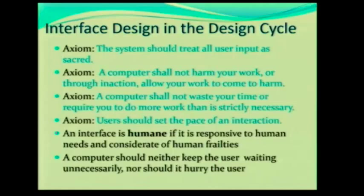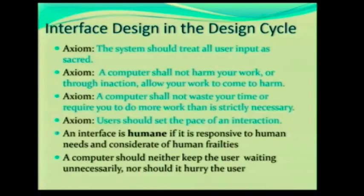Raskin claims that an interface is humane if it is responsive to human needs and considerate of human frailties. A computer should neither keep the user waiting unnecessarily, nor should it hurry the user. It's really about what the user needs and wants — keeping in mind that even things such as timing out for safety reasons are part of it, because users also want their data to be safe.